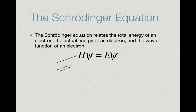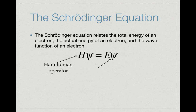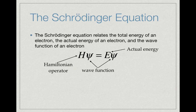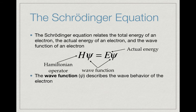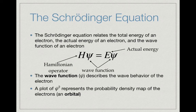The capital H is what's called a Hamiltonian operator, something similar to a differential. Psi is our wave function, and E is the actual energy for an electron. That wave function psi describes the wave behavior of the electron as it travels around the atom. And if we make a plot of psi squared, that gives us a probability density map of the electrons.